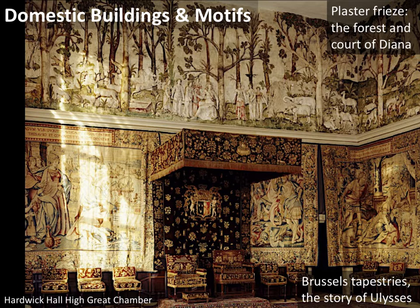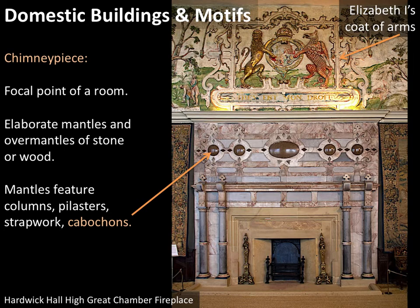Looking at the chimney piece of the high great chamber, again you see how this is the focal point of the room — an elaborate mantle and over-mantle, mostly stone in this building. The elements include columns, engaged pilasters, cabochons (those jewel-like structures built into it), and strap work — I'll show you a better example of strap work in a second. I also want to point out that up overhead you have the coat of arms of Elizabeth I. Talk about kissing up: you put the coat of arms of the royal into your building just to get her to come and visit.